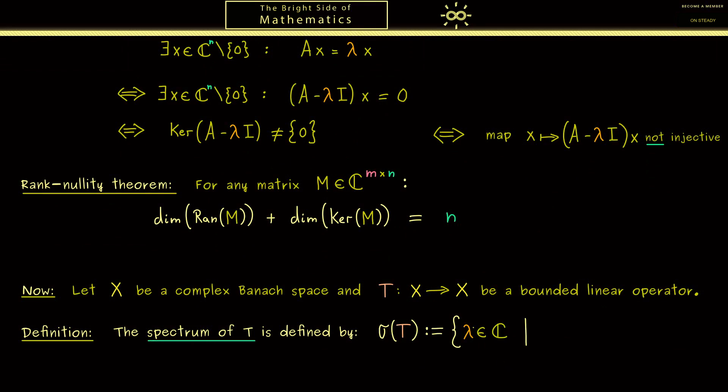And usually it's denoted by the lowercase σ. Now inside this set σ(T) we have all the complex numbers λ such that T - λI is not bijective. Therefore if we consider a finite-dimensional vector space X, we are in this case again and get out a set of all the eigenvalues.